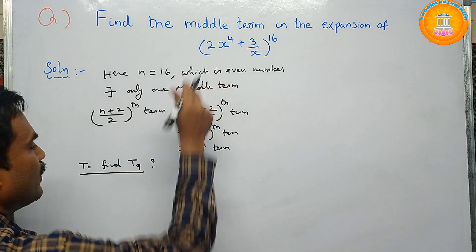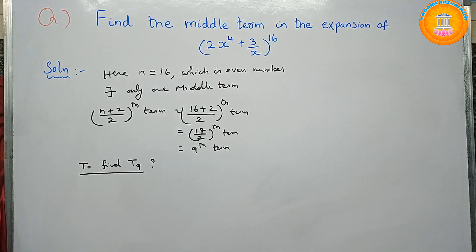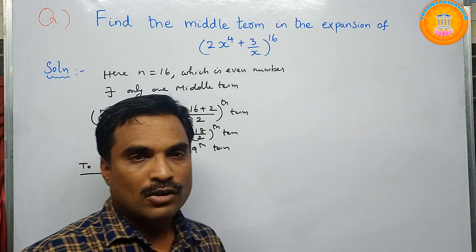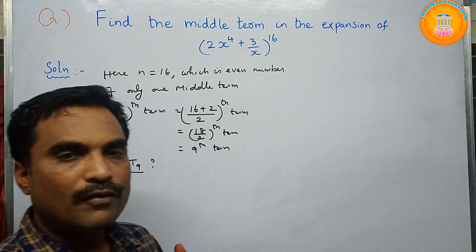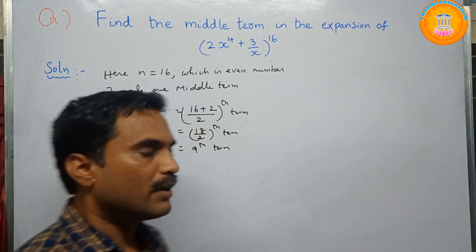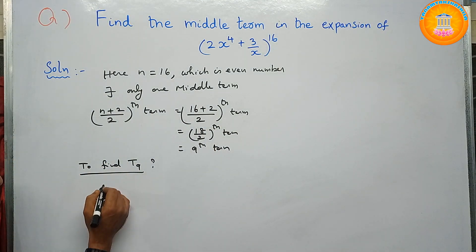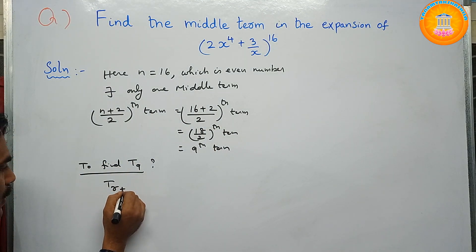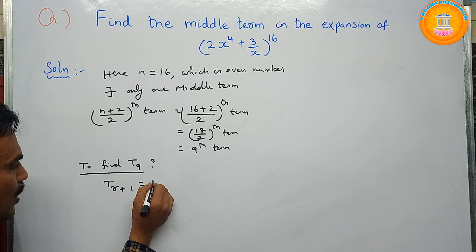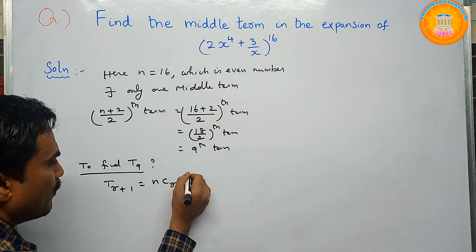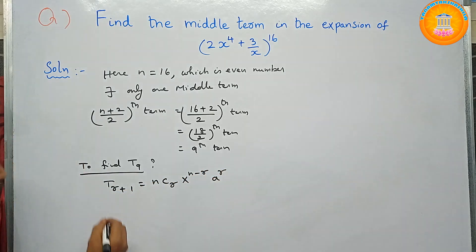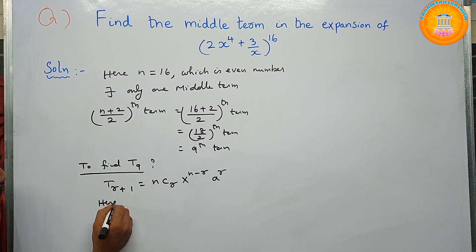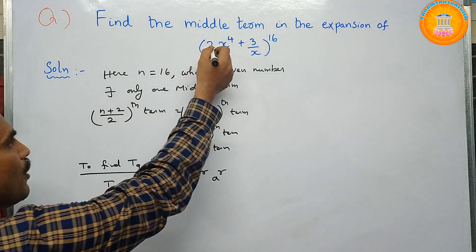To find the 9th term from the given expansion, we use the general term formula: T_(r+1) = nCr · x^(n−r) · a^r.